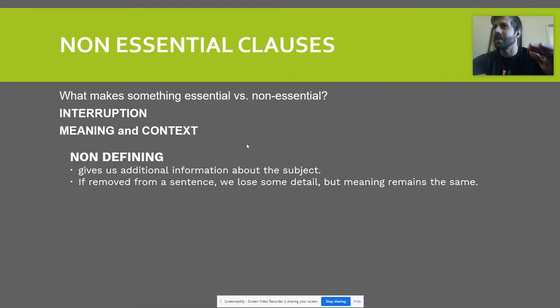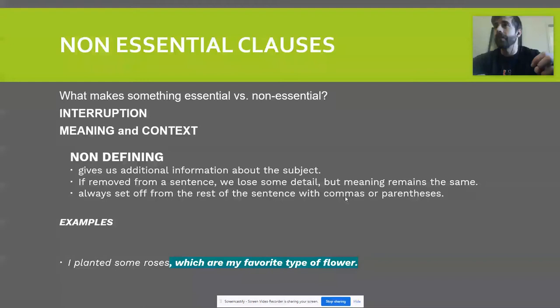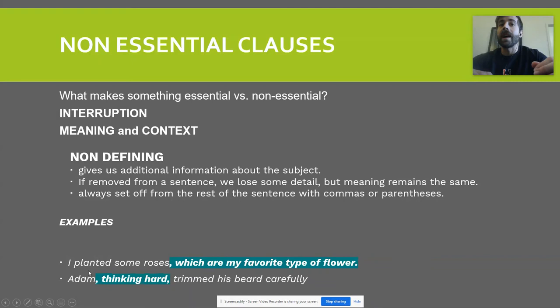Whether something is essential or non-essential is highly contextual — it depends on the sentence we're writing. We are always going to set non-essential phrases off from the rest of the sentence with a comma or parenthesis. For example: 'I planted some roses, which are my favorite type of flower.' I don't need that 'which' phrase to define what roses are — it's nice to know, but it's extra information. Similarly: 'Adam, thinking hard, trimmed his beard carefully.' This is extra information about how I trimmed my beard — it's interrupting the flow of my sentence, so I separate it off with commas.